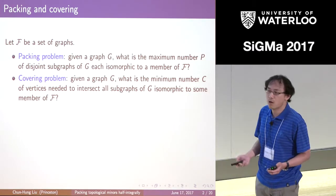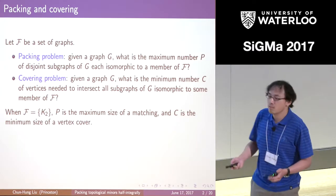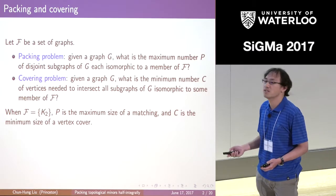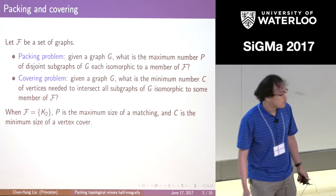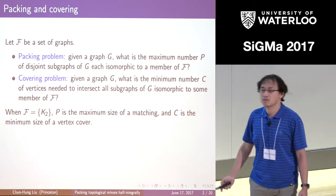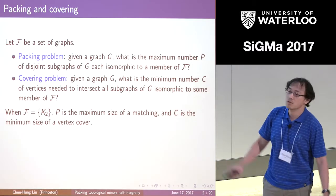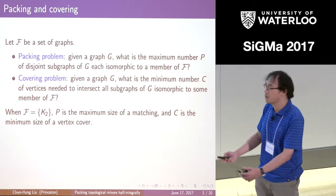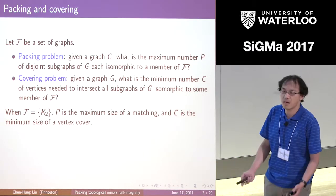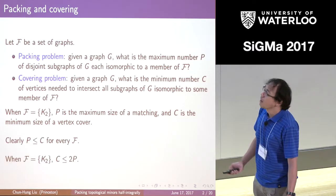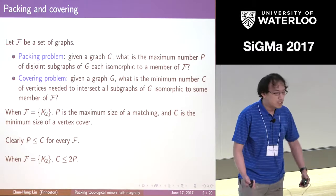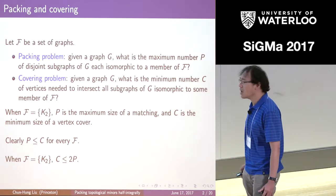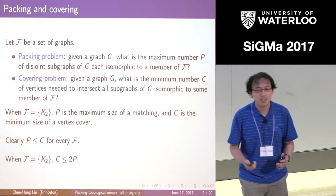Several problems in graph theory can be modeled into one of these forms. For example, if I take F to be the set of graphs consisting of K2, then the packing problem asks for the maximum size of a matching, and the covering problem asks for the minimum size of a vertex cover. In general, these two problems are integer programming problems, and the optimal values can be arbitrarily far apart. But at least we know the packing optimum is at most the covering optimum, because if I have P disjoint subgraphs, I need P vertices to touch them all.